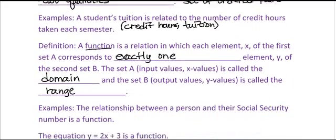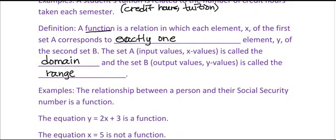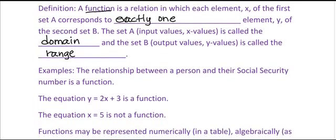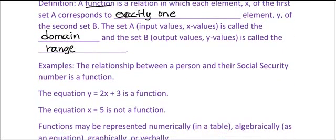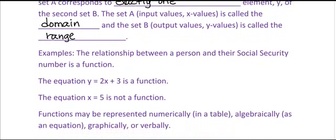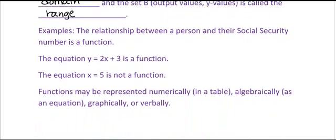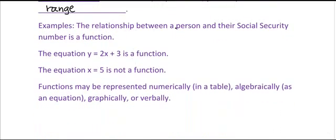So, some more examples of functions would be something like this. The relationship between a person and their Social Security number is a function, right? Because if our input is person and output is Social Security number, person has only one Social Security number, so that is a function, because for every input, there's exactly one output.